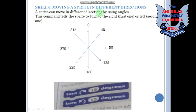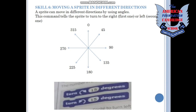Now we are heading towards Scale 6, which is moving a sprite in different directions. A sprite can move in different directions by using angles. This command tells the sprite to turn — the first one is for the right and the second one is for the left. Here we have some degrees — we have already learned about degrees.